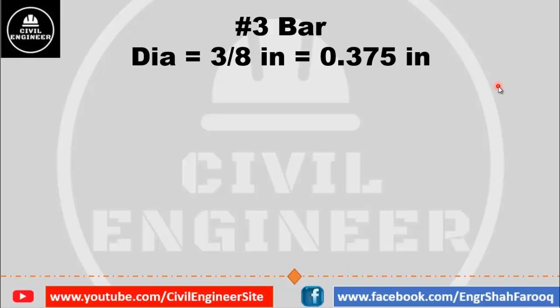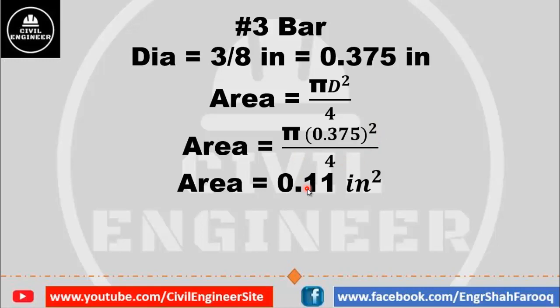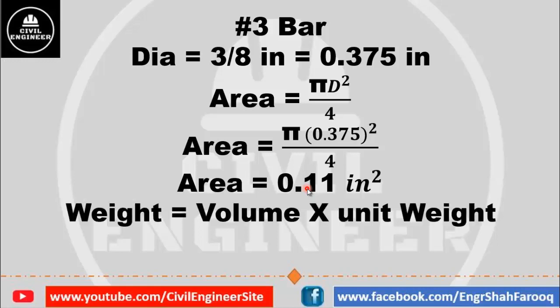We know that the cross-section of bars is circular, so for a circular section the area is equal to π/4 × d². Putting in the values, the area equals π × (0.375)² divided by 4. After doing the simple calculation, we get area equal to 0.11 square inches.